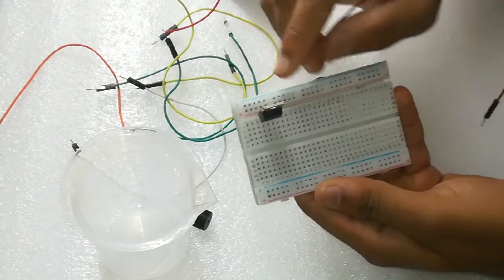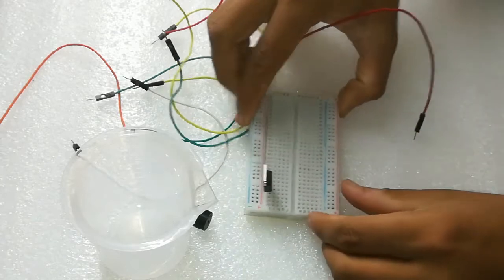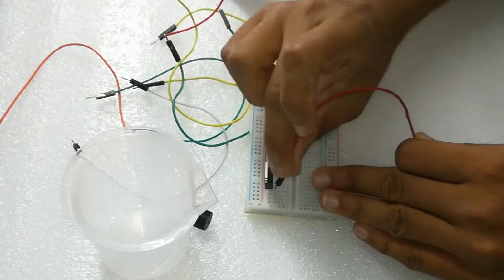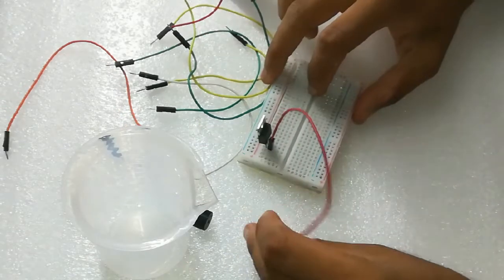We will take a jumper cable and connect it to the gate, meaning the first pin of your MOSFET.